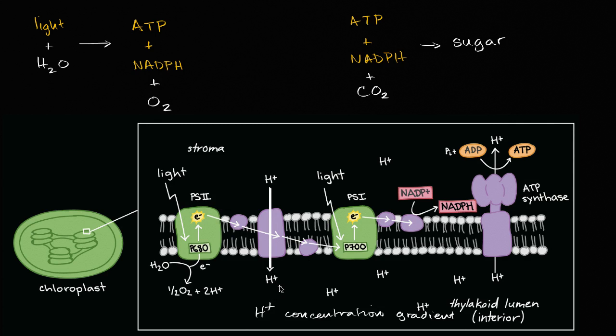By ATP synthase, those hydrogen ions want to get back out, they want to go down their concentration gradient, and as they go back out through the ATP synthase, it essentially turns that motor that can jam the phosphate group onto ADP to produce ATP.